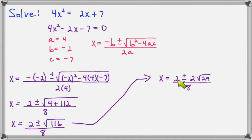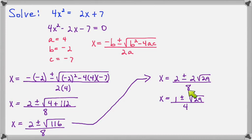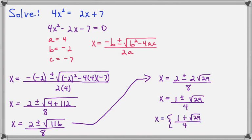Notice that 2, 2, and 8 can all be divided by 2. So 2 divided by 2 is 1, 2 divided by 2 is 1, and 8 divided by 2 is 4. This is completely simplified now, and my two separate answers are 1 plus the square root of 29 all over 4, and 1 minus the square root of 29 all over 4.